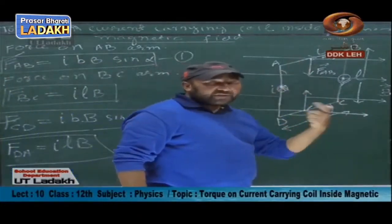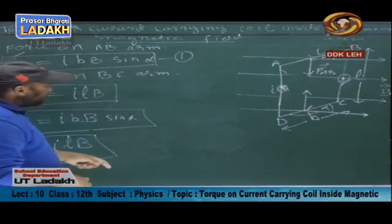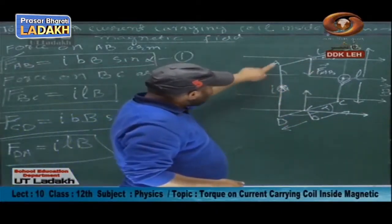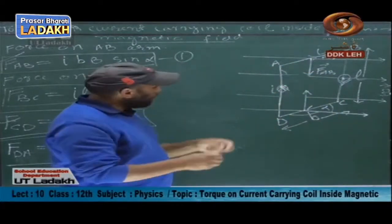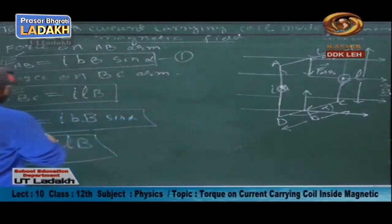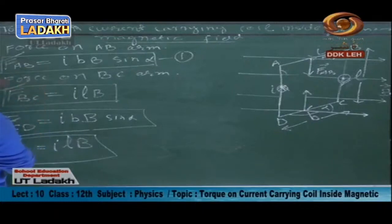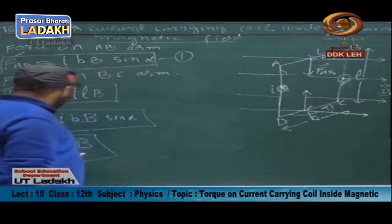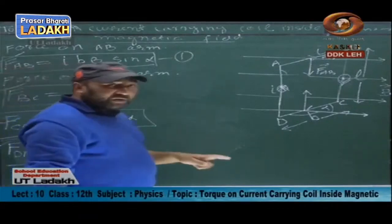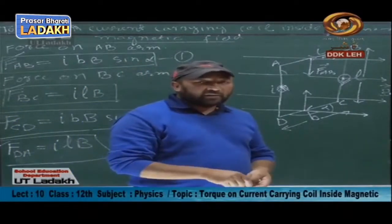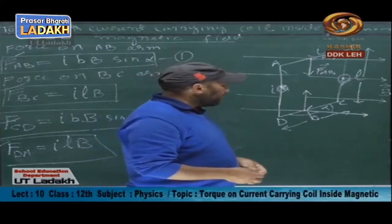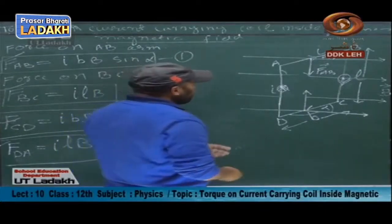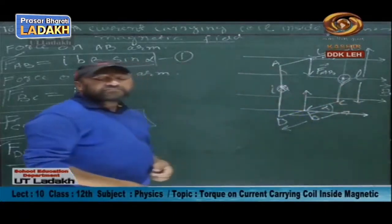The forces on BC and DA also have the same magnitude, ILB, and are opposite in direction, but they do not lie along the same line of action. Because their lines of action are different, these two forces form a couple that rotates the coil.